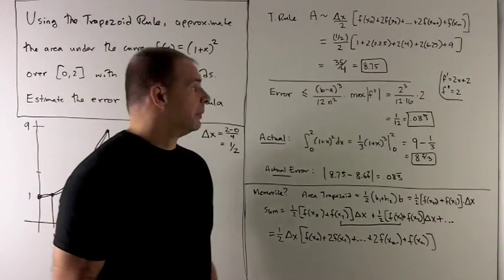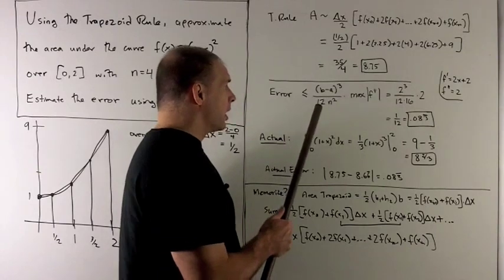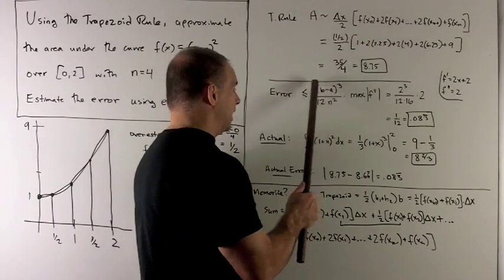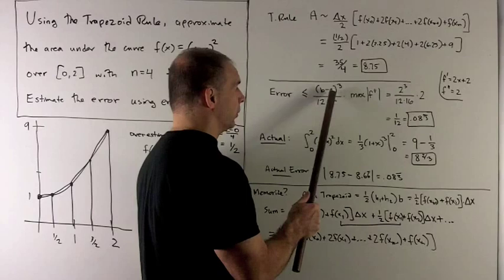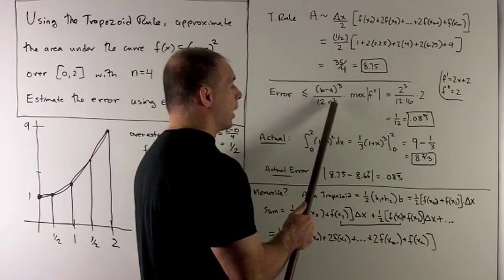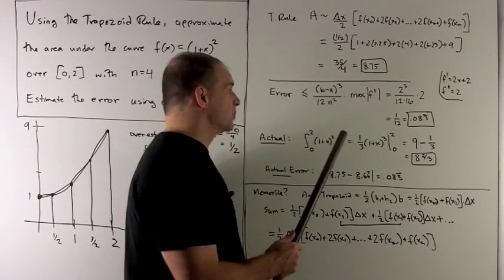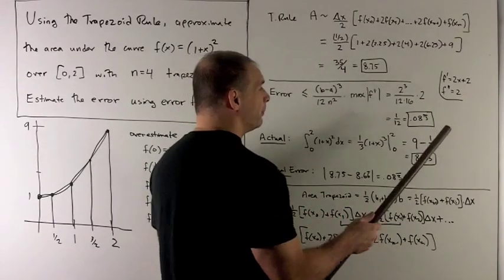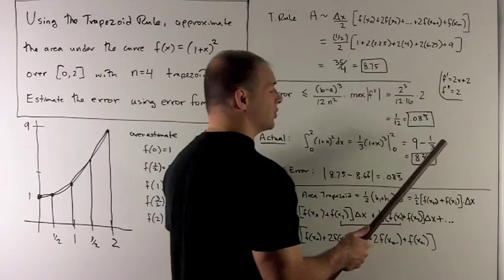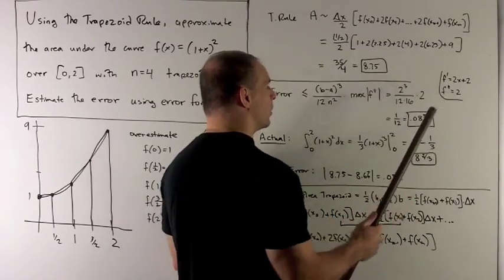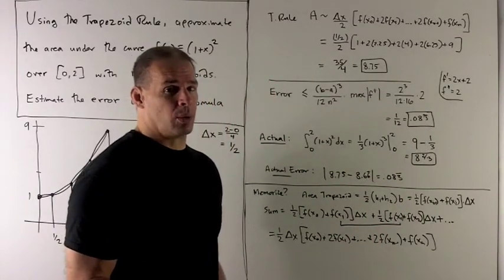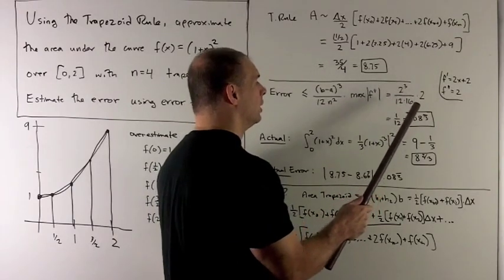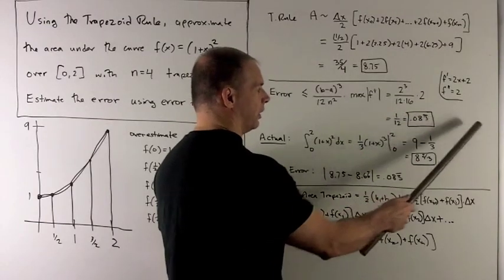Let's check out the error rule. For the error, we pretty much have to either look up or memorize this formula. What we're going to be given is: you take the base, the entire base from 0 to 2, take its length cubed, divide by 12n². Here we have n = 4 trapezoids. Then we multiply this by the max of |f''|. For f, the first derivative is 2x, second derivative is f'' = 2. So we don't have to worry about the max. This thing is going to be 2 no matter what we put in. So I wind up with 2³/(12 × 16) = 1/12, and the error is 0.083 repeating.